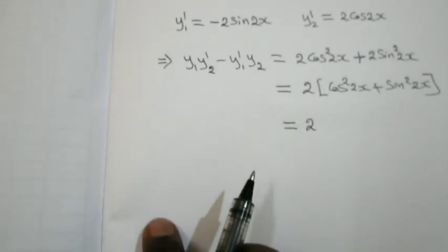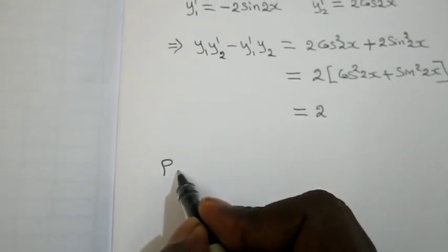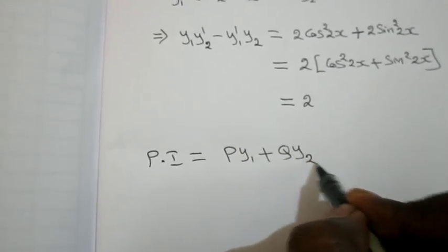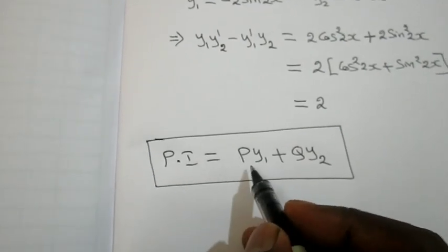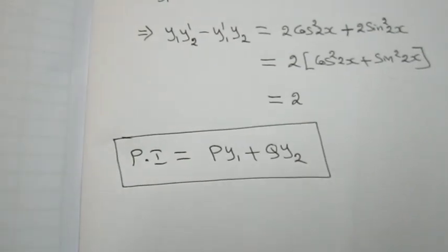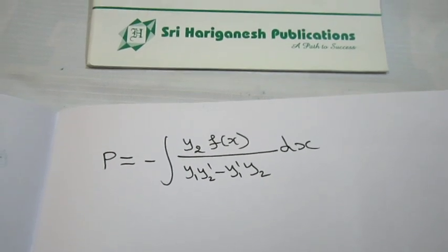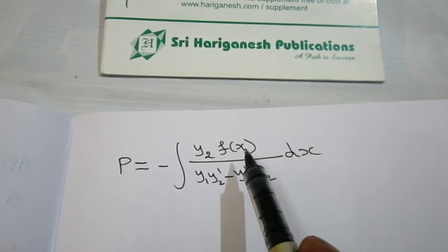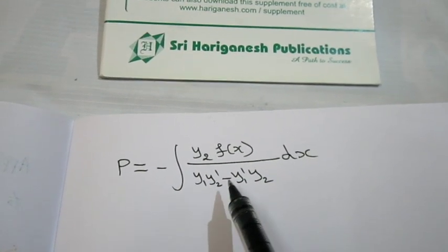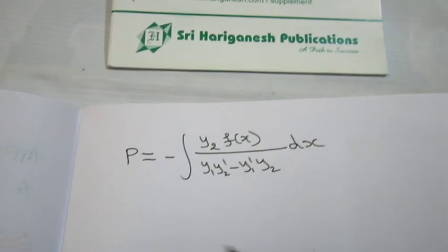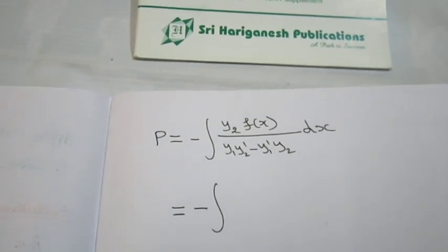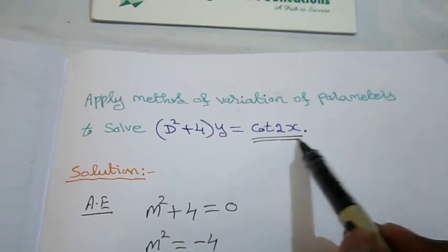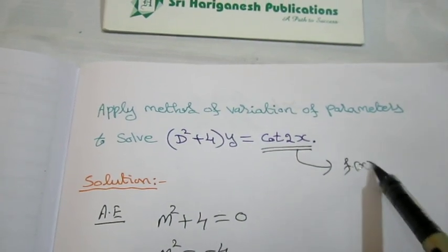Now I find P and Q values for the particular integral. The particular integral is P·y1 + Q·y2. We must find P and Q separately. The formula for P is: P = -∫[y2·f(x) / (y1·y2' - y1'·y2)] dx. Here y2 = sin 2x and f(x) is always the right-hand side of the given function, which is cot 2x.